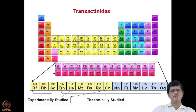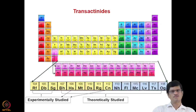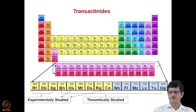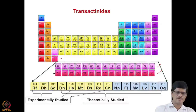The early transactinides like Rutherfordium (element 104), Dubnium (element 105), Seaborgium (element 106), and Hassium (element 108) have been chemically studied in aqueous medium. Gas phase chemistry of these elements has also been studied extensively, including a gas phase chemistry report of element 112 recently. Lanthanides and actinides are called the inner transition series, while transactinides are part of the transition series.